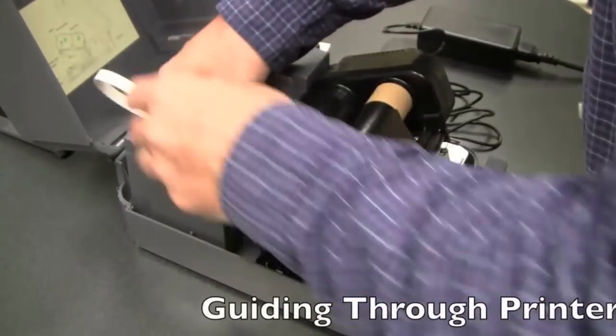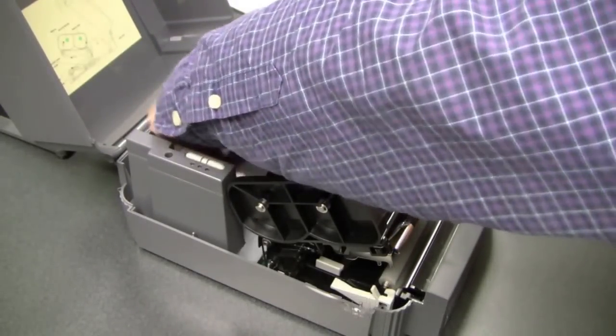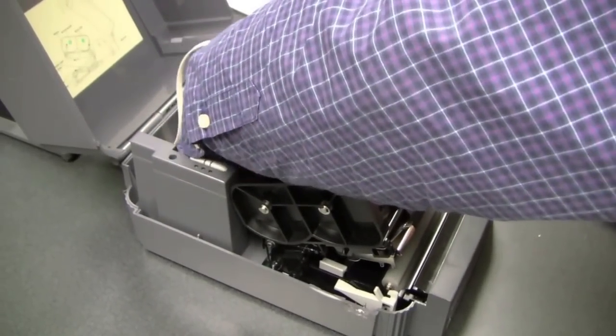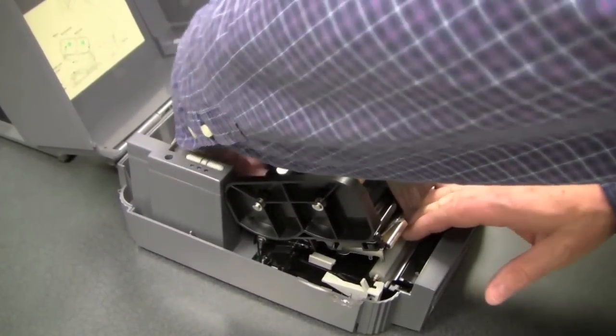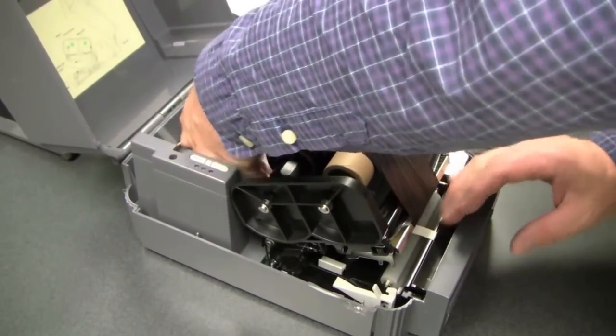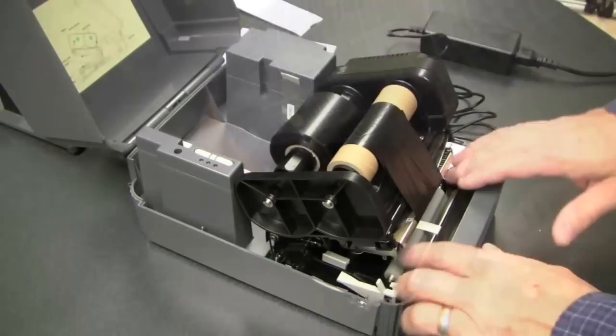Guide the tubing through the printer inside by opening the printhead, and then sliding the tubing through underneath the printhead and through the cutter at the front of the printer.